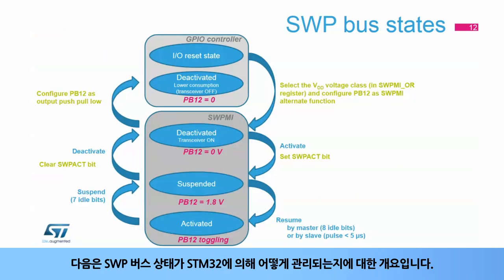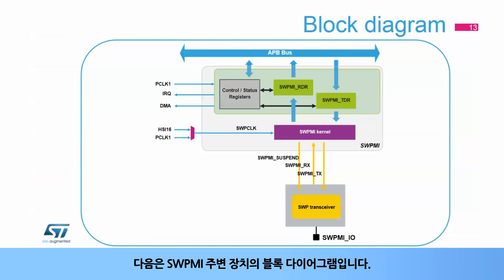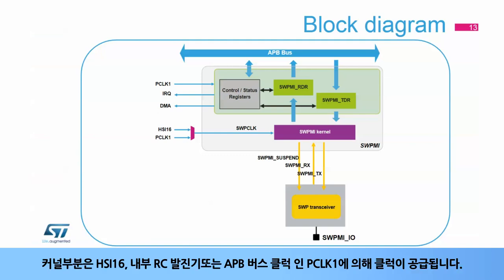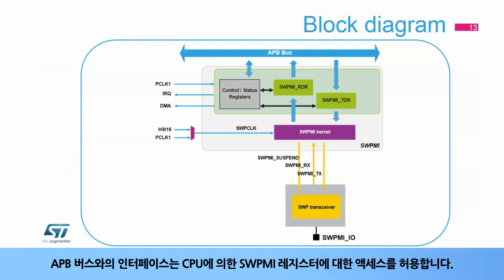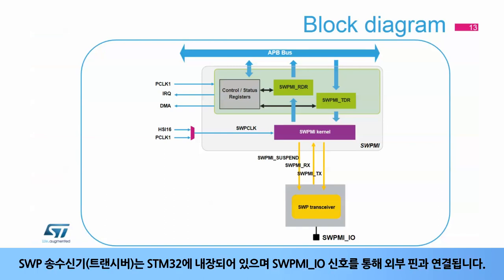Here is an overview of how the SWP bus states are managed by the STM32. You can refer to the reference manual for more details about the initialization and activation procedures. Here is the block diagram of the SWPMI peripheral. The kernel part is clocked either by the HSI-16 internal RC oscillator or by PCLK1, which is the APB bus clock. The interface with the APB bus allows access to the SWPMI registers by the CPU. There are also connections to the NVIC and the DMA. The SWP transceiver is embedded in the STM32, which interfaces with the external pin through the SWPMI IO signal.